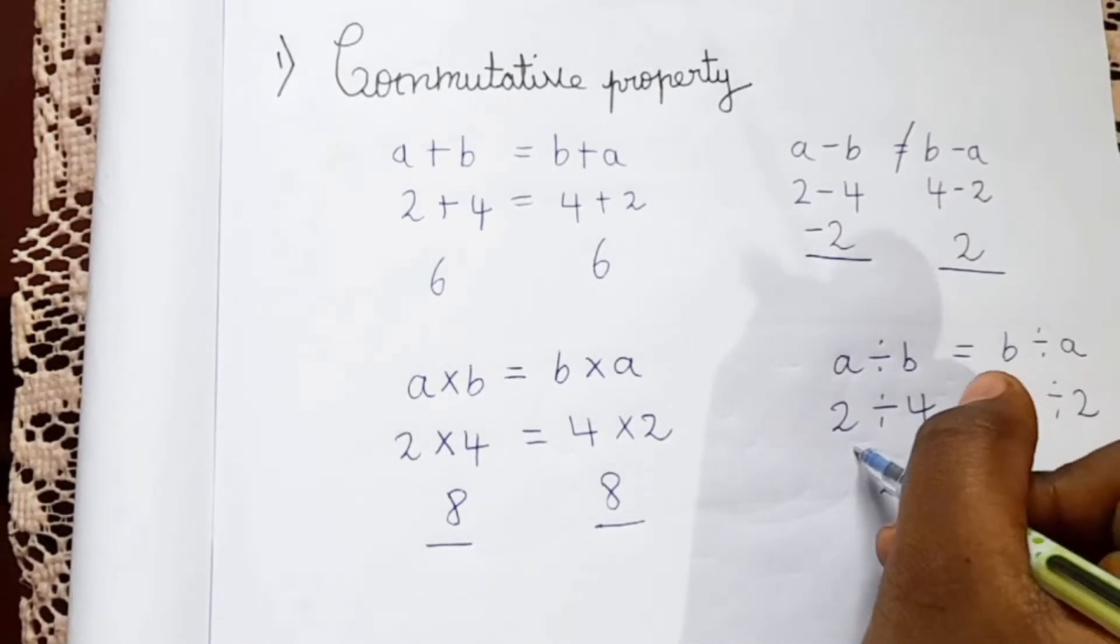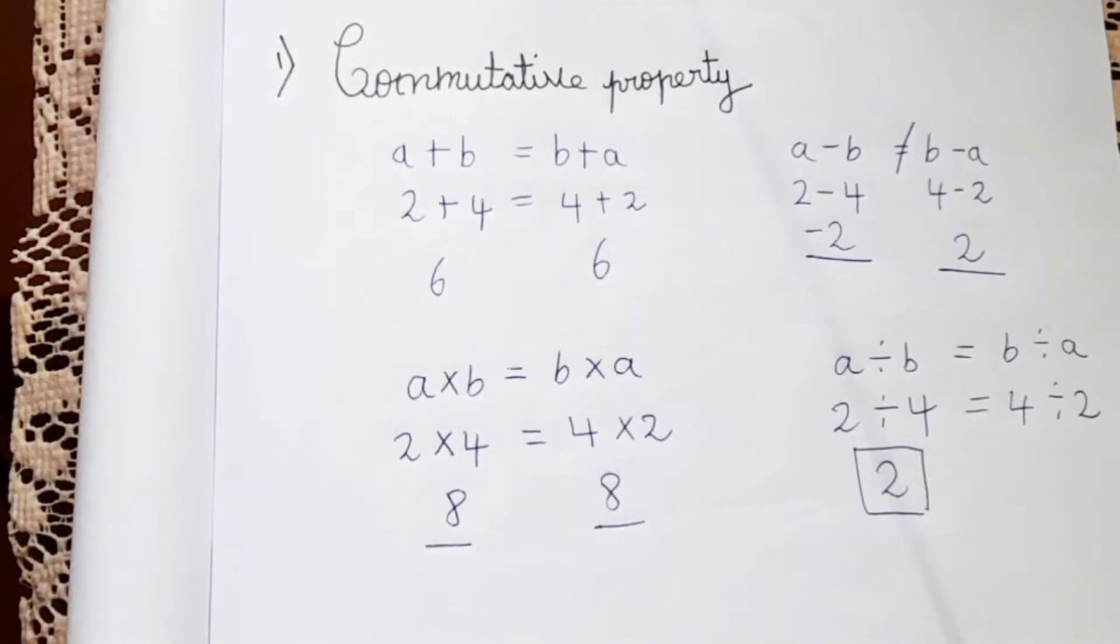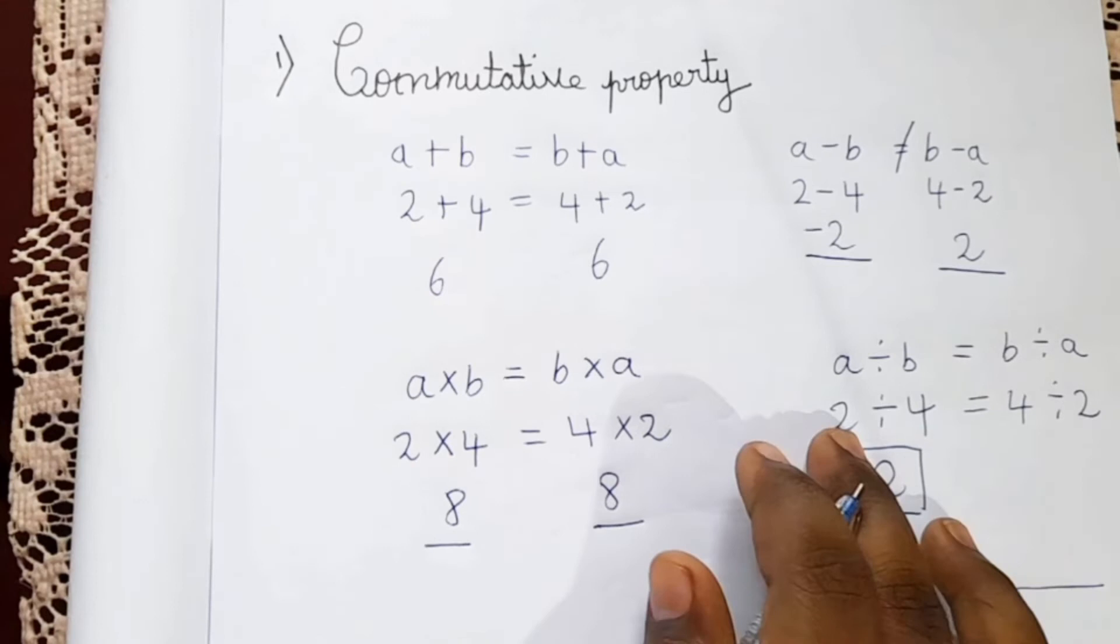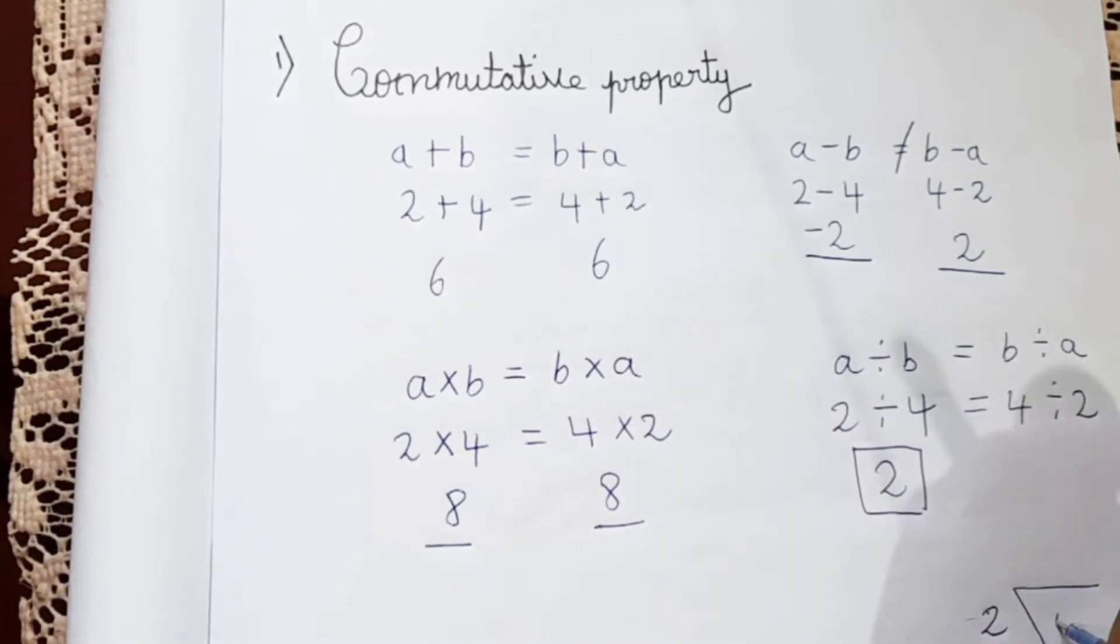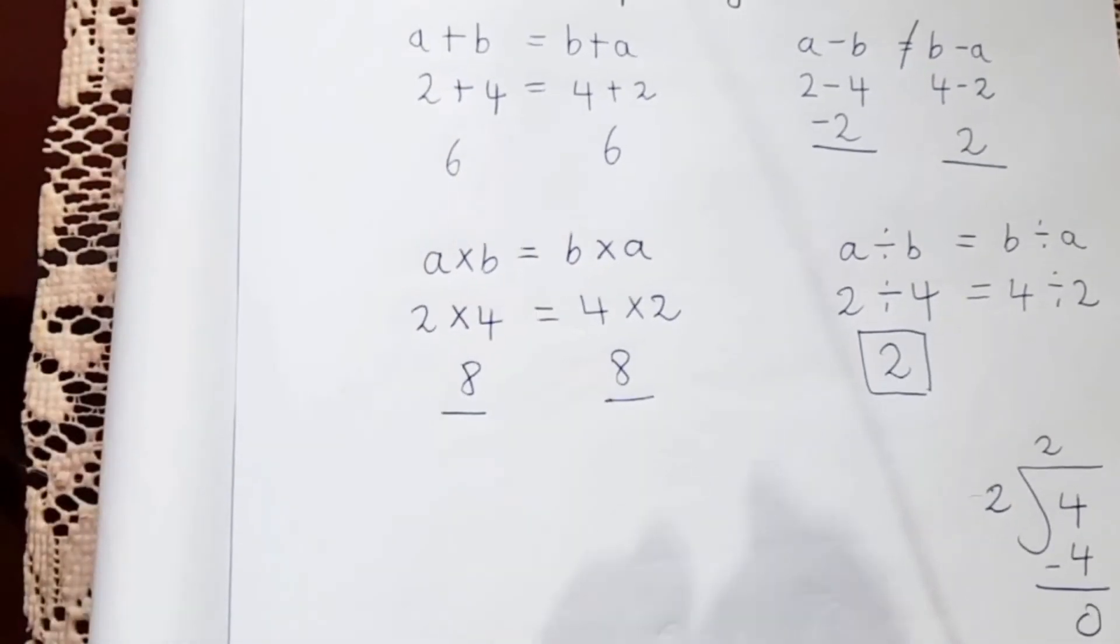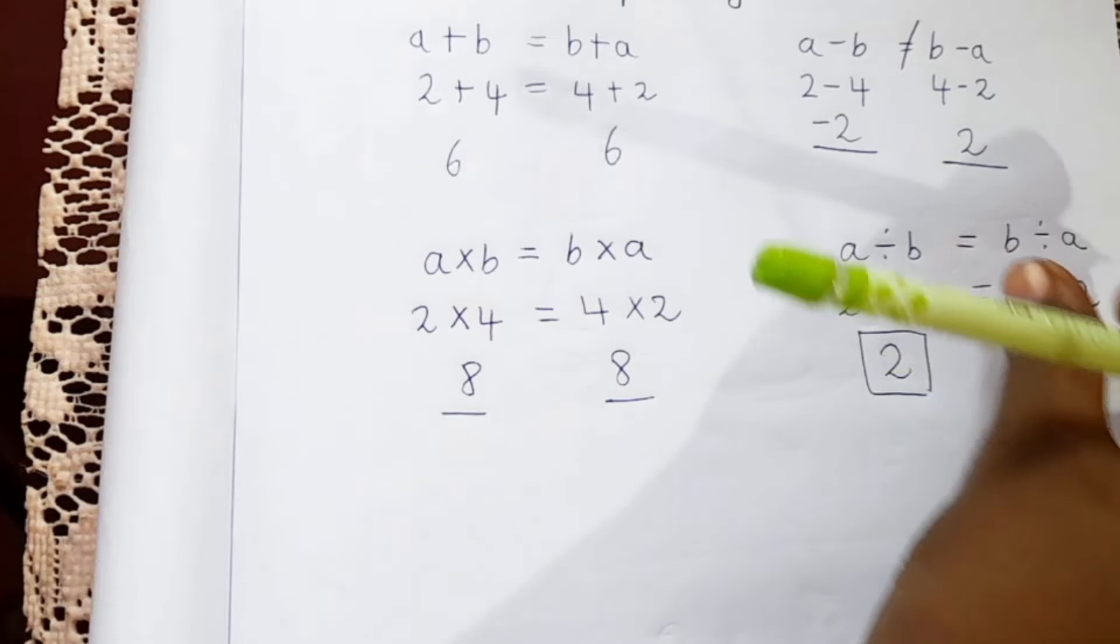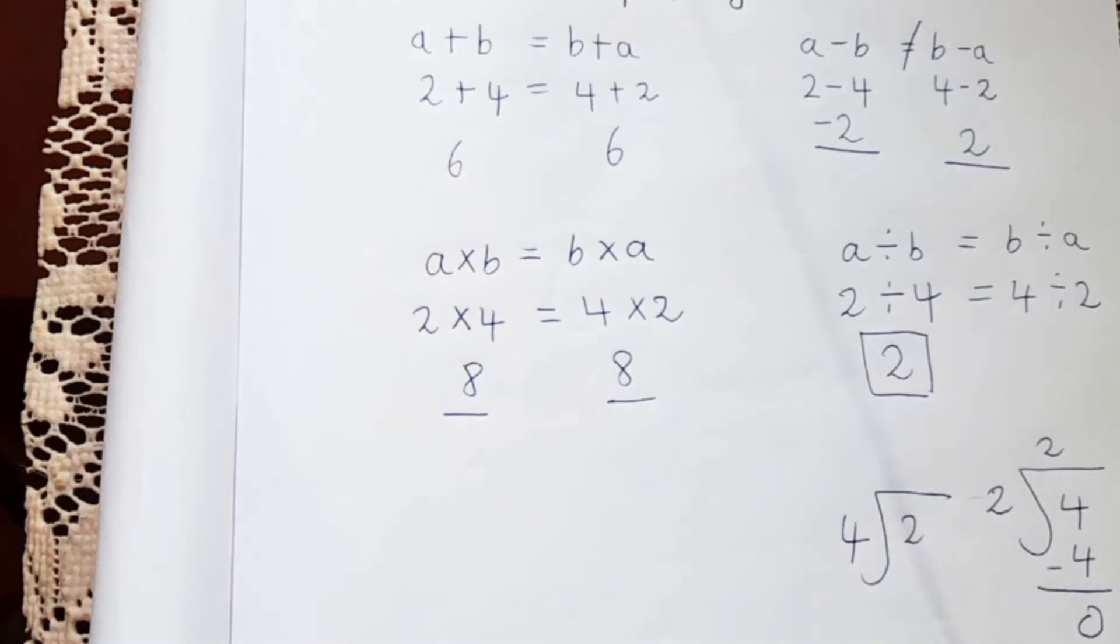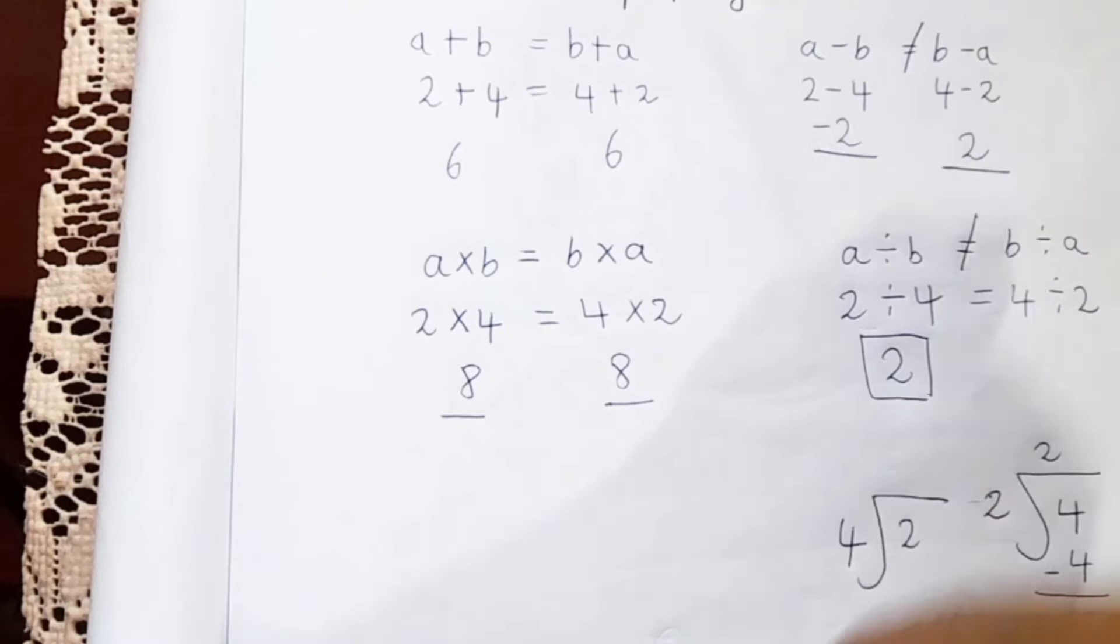But we can't divide 4 divided by 2 because here outside we have to write the small number. So here we are dividing with the small number. So we can divide 2 divided by 4 which we get 2 into 2 is 4, so we got that quotient as 2. But here what to do, we can't write the bigger number outside so we can't divide it right. So which means if we can't divide or if you are not able to get any answer it means it's not equal. So in subtraction and division commutative property is not there.